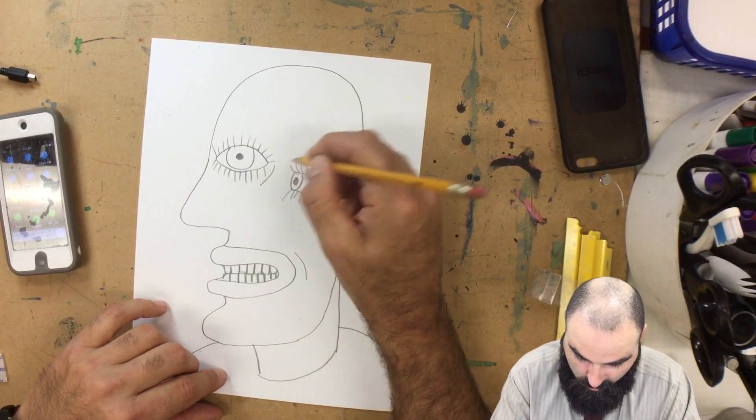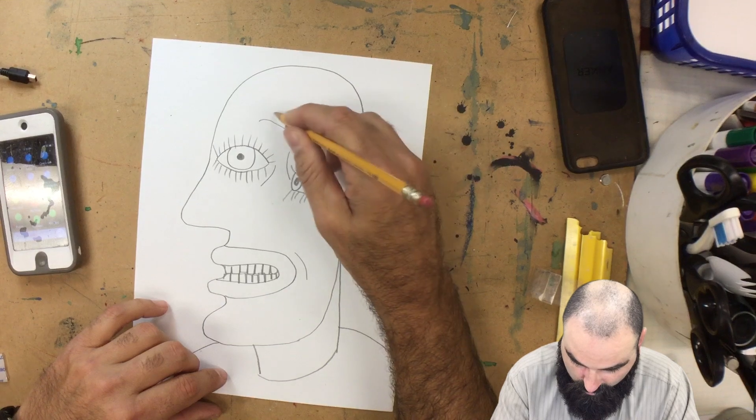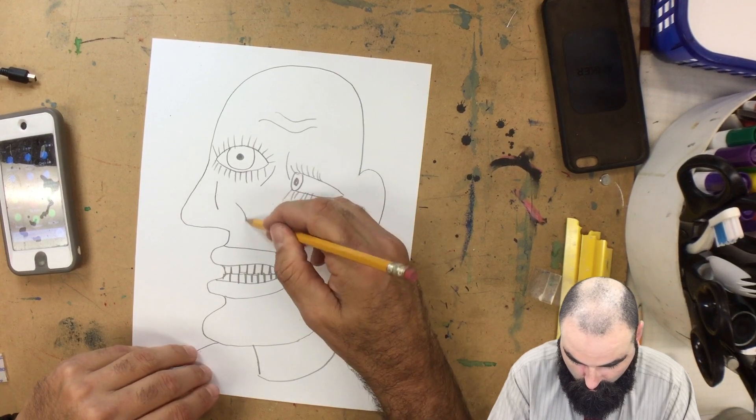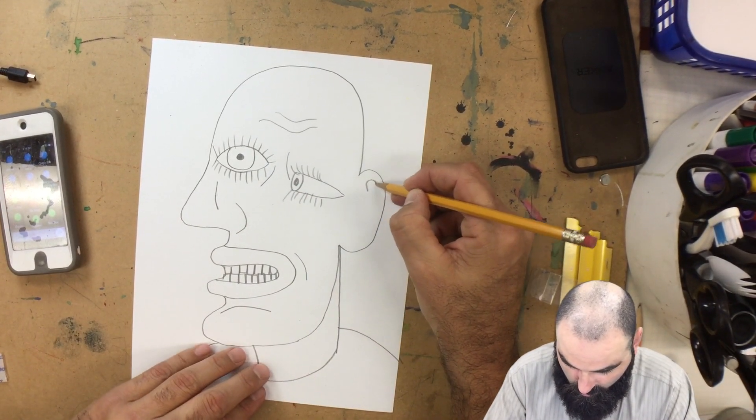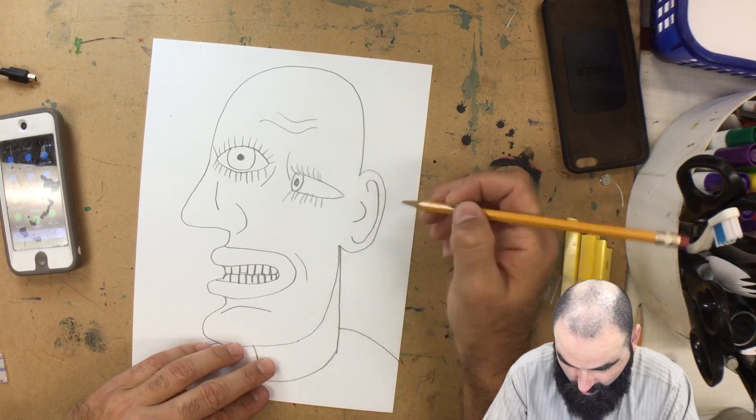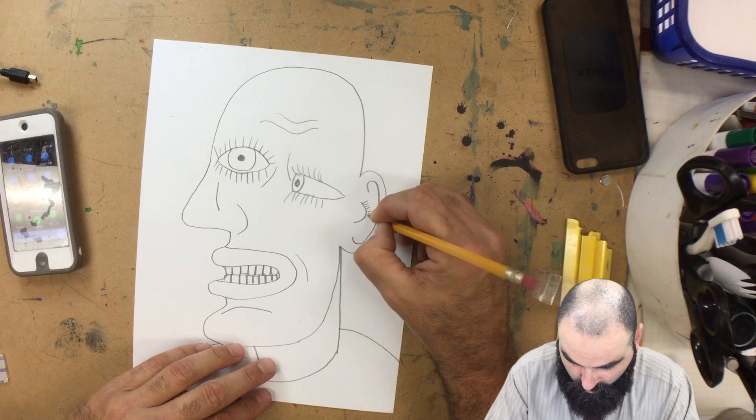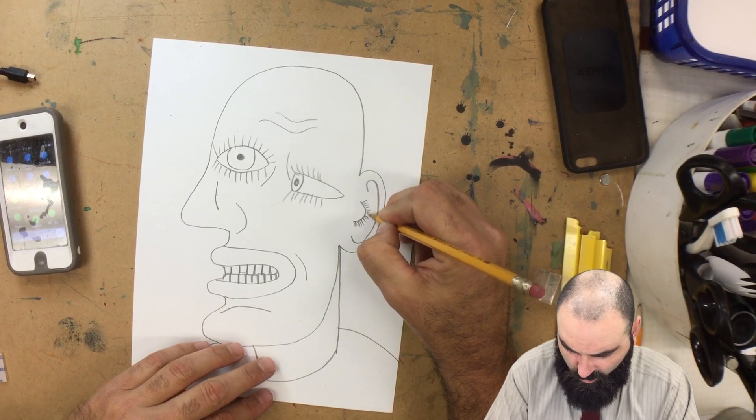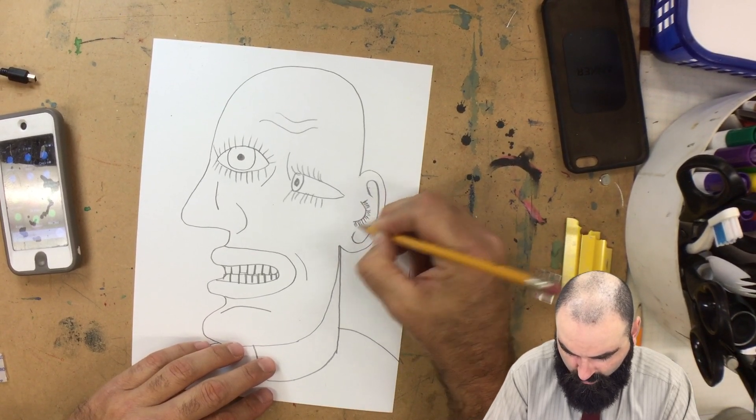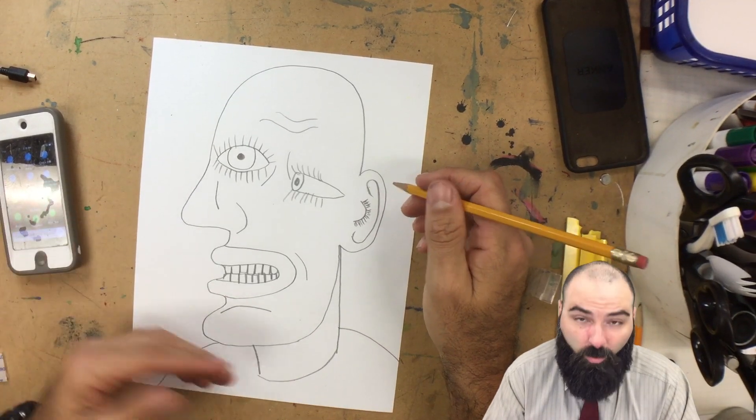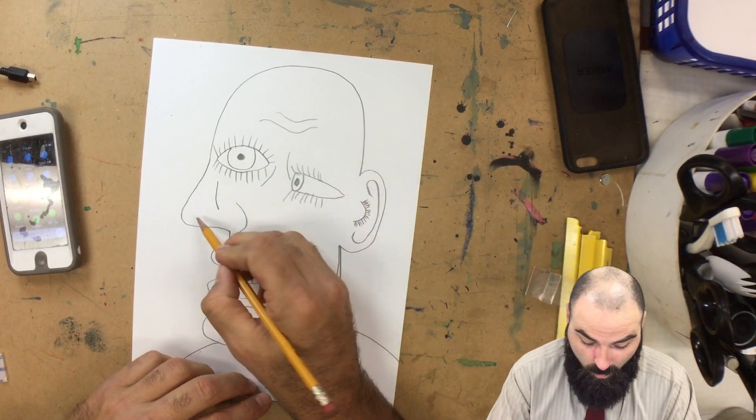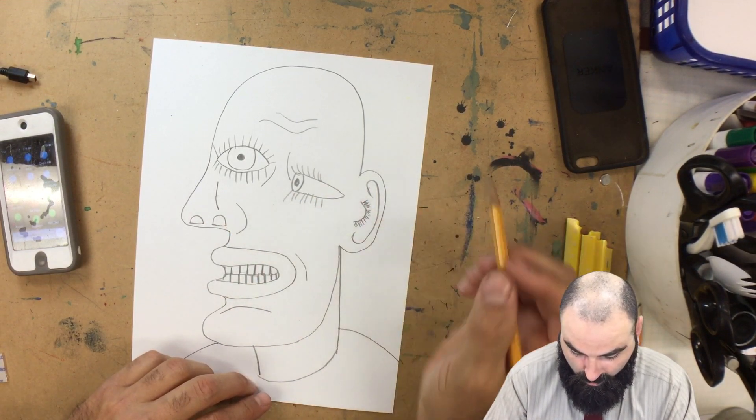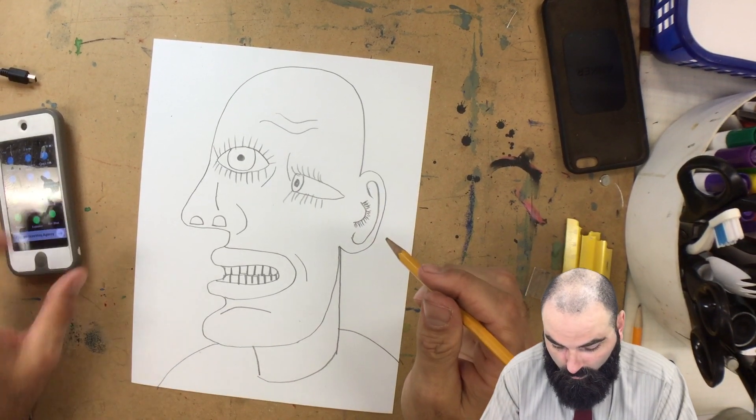Maybe this cubist portrait is of someone who's very angry. I always like to add some lines here and there, forehead lines, nose lines, chin lines, the folds of the skin and the ear. I put some hair coming out of his ear. Is that weird? Some people have hair growing out of their ear. This drawing is pretty weird anyway, so why not? Now nostrils. You can draw hair coming out of those too if you want. We'll add some details.